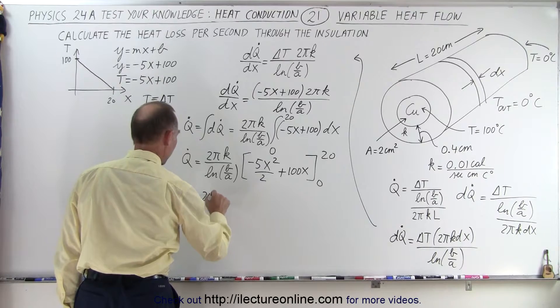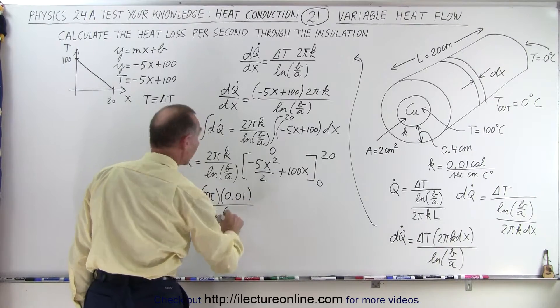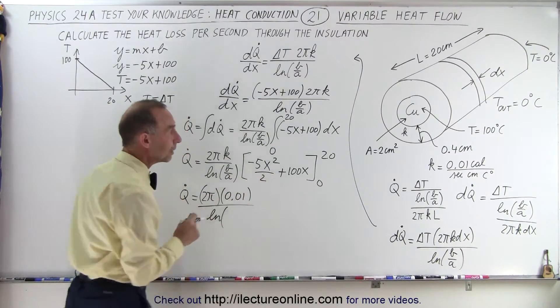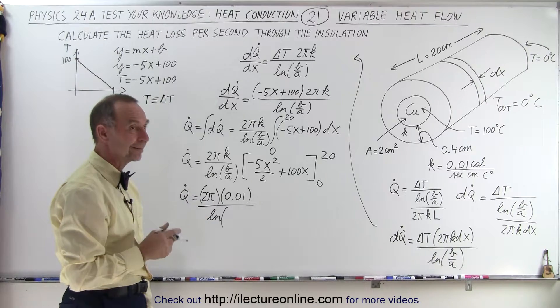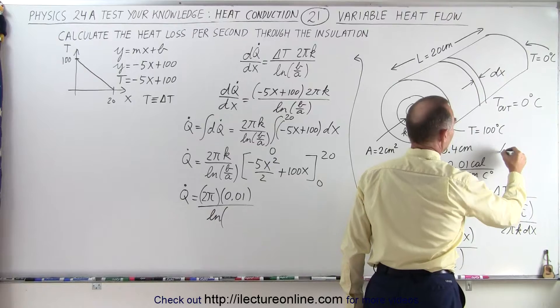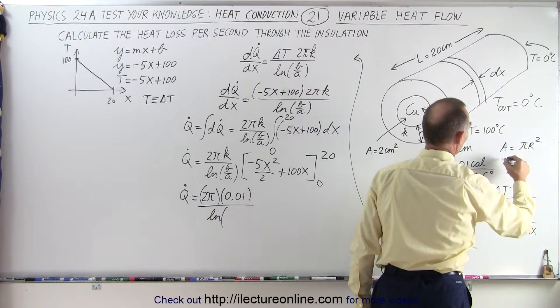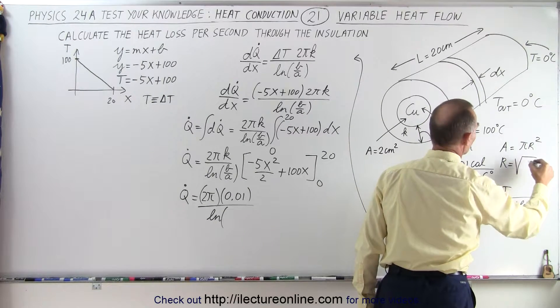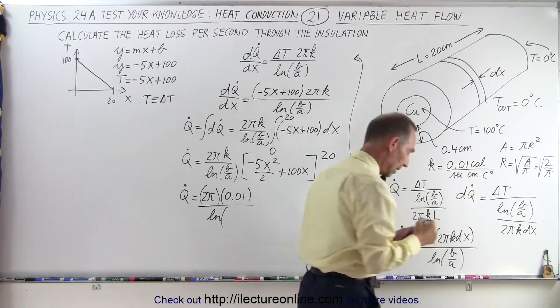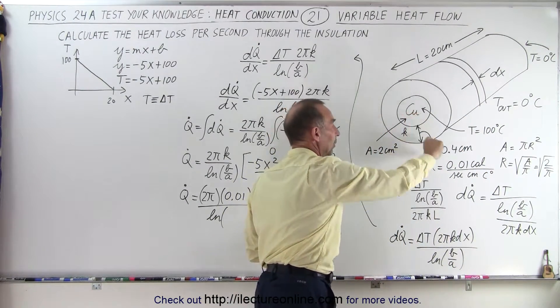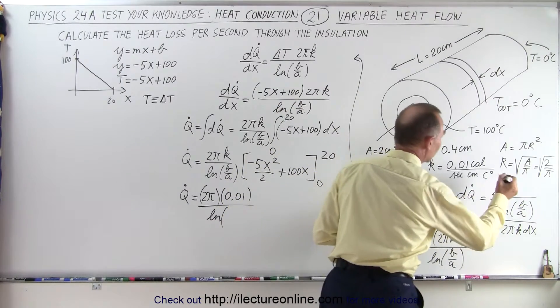Q̇ is equal to 2π times K. Now, K is equal to 0.01 divided by the natural log of outside diameter. We need to find out what the radius is. We know the area, but we don't know the radius. So the area is equal to πR squared, which means R is equal to the square root of A over π, which is equal to the square root of 2 divided by π. So that's the radius, the radius of the copper, and then we have to add to that 0.4. So the inside radius A would be equal to A, so 2 divided by π, take the square root of that, which is close enough to 0.8. So that means that the inside radius is equal to 0.8 centimeters.